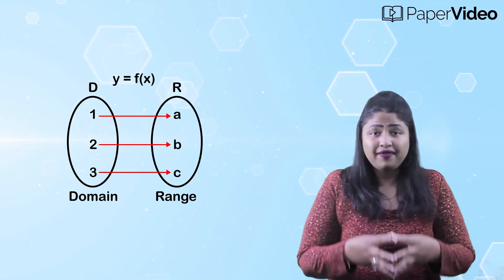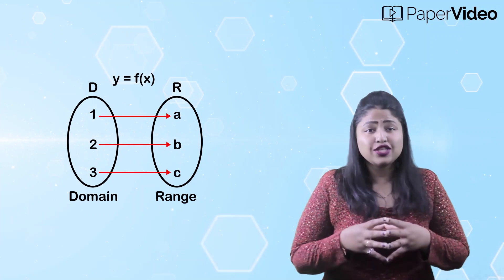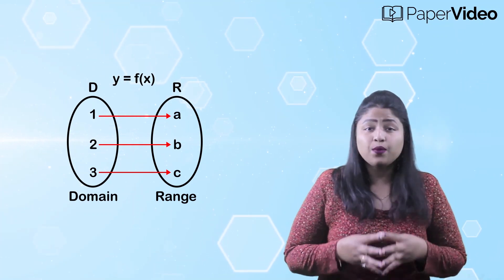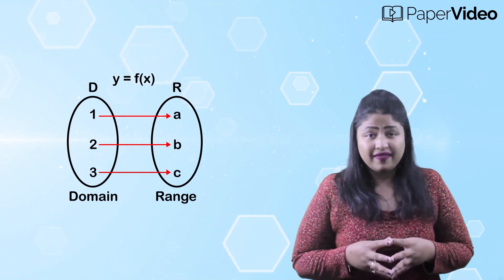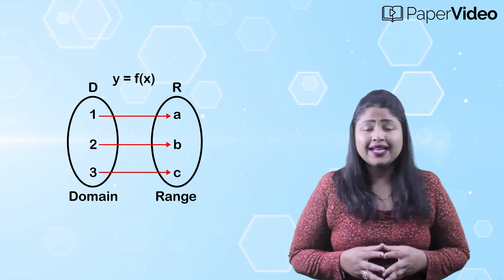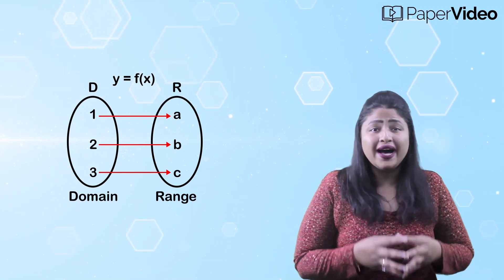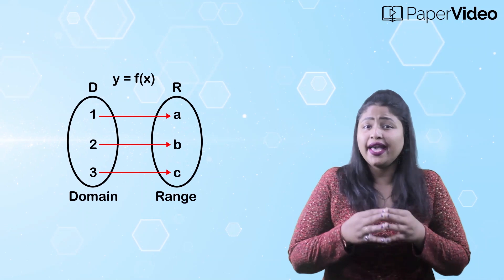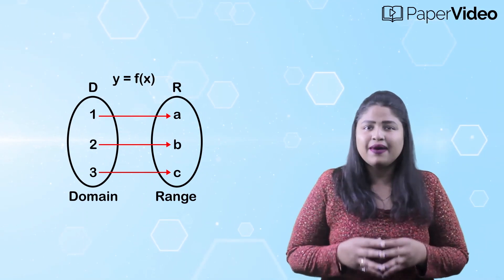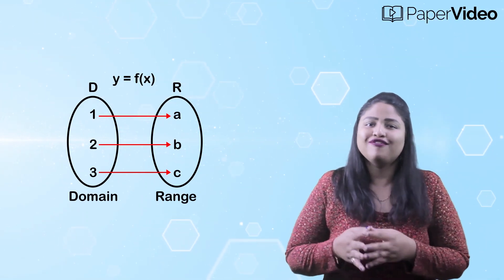And if, under the same domain and range, for every value of y in the range R there corresponds one and only one value of x in the domain D, then we say that the inverse function of y equals f of x exists and is given by x equals g of y.